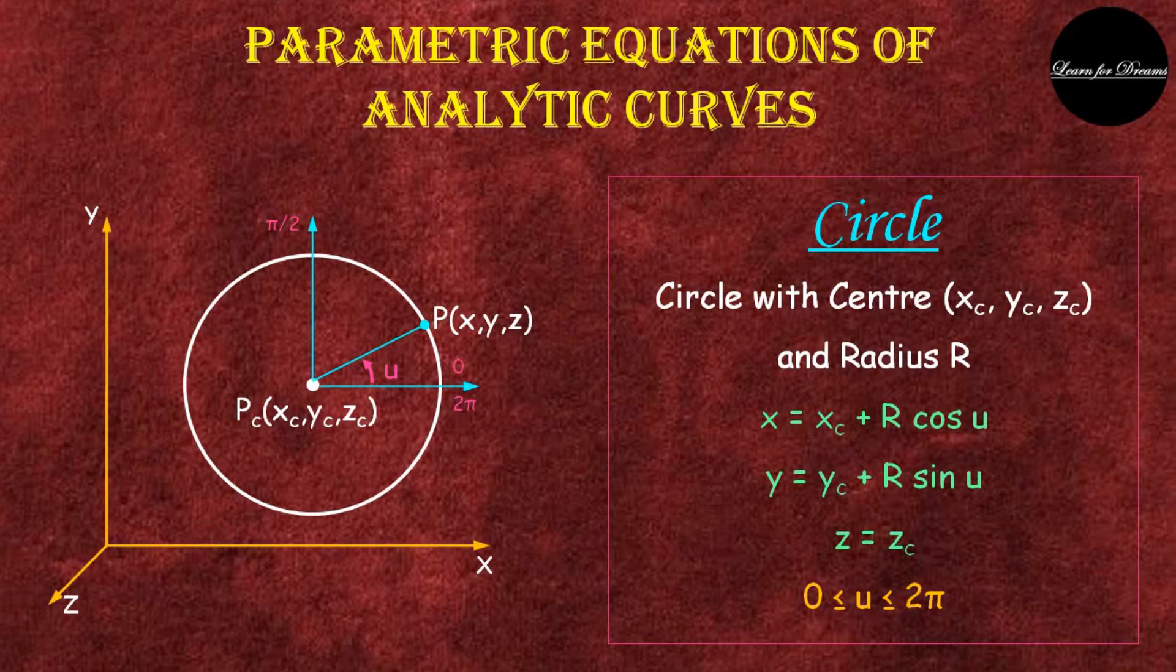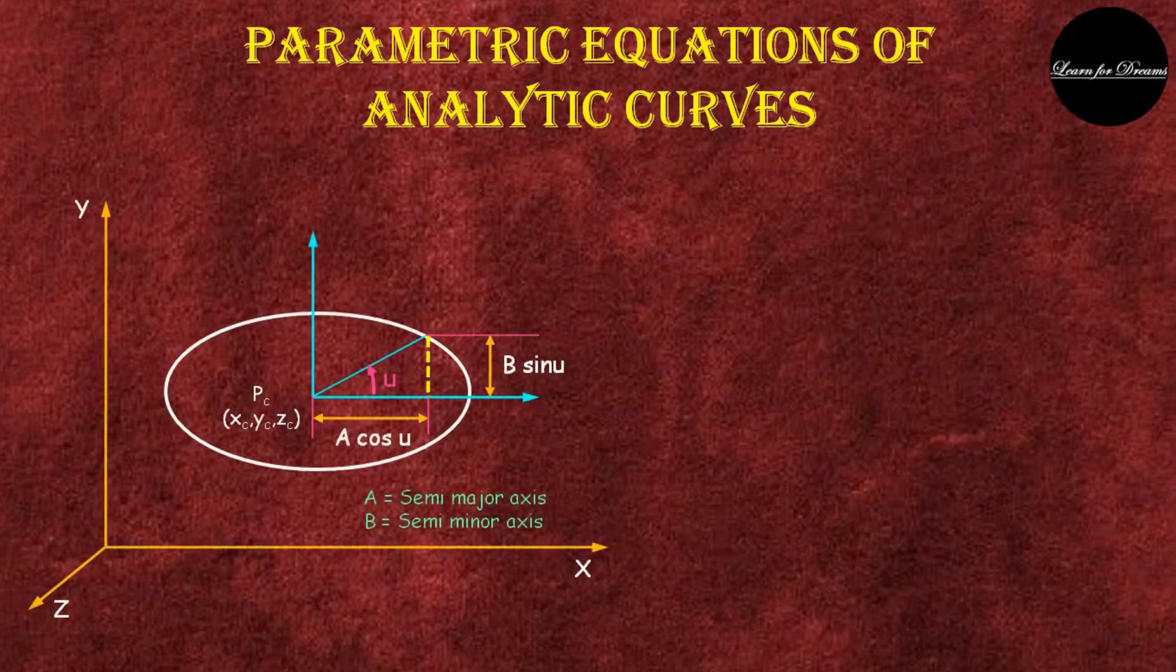Y is equal to yc plus r sin u, and z is equal to zc. Here u should lie between 0 to 2π, that is 0 to 360 degrees.